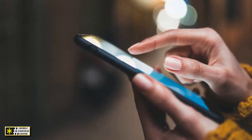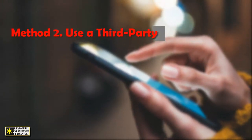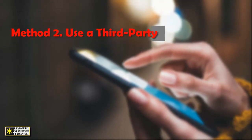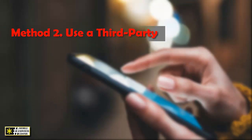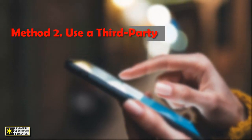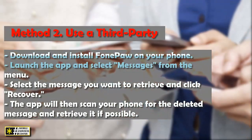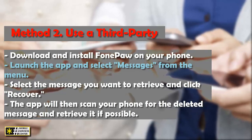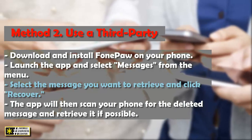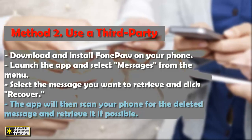Method two: use a third-party app. There are several third-party apps available that can help you retrieve deleted text messages on your T-Mobile phone. One such app is called PhonePaw, which is available for both Android and iOS devices. You can use it as follows: download and install PhonePaw on your phone, launch the app and select Messages from the menu, select the message you want to retrieve and click Recover. The app will then scan your phone for the deleted message and retrieve it if possible.